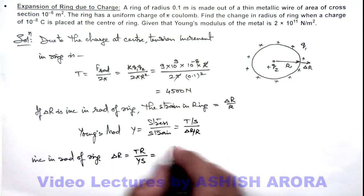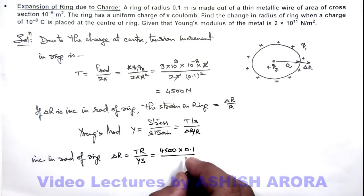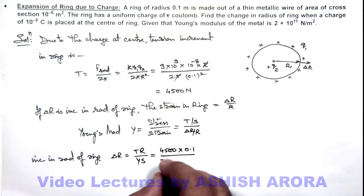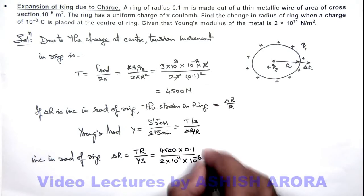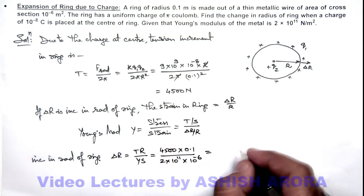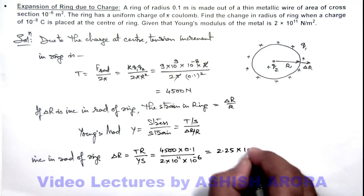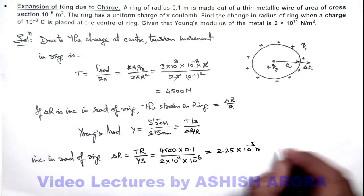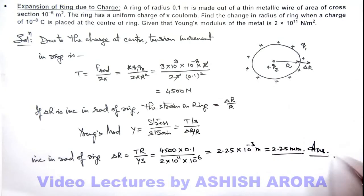If I substitute the numerical values, T is 4,500 multiplied by radius 0.1, divided by Young's modulus 2 into 10 to power 11, and the cross-sectional area is 10 to power minus 6 meter square. On simplifying this, you'll be getting 2.25 into 10 to power minus 3 meter, which is 2.25 millimeter. That is the increase in radius of this ring, which is the answer to this problem.